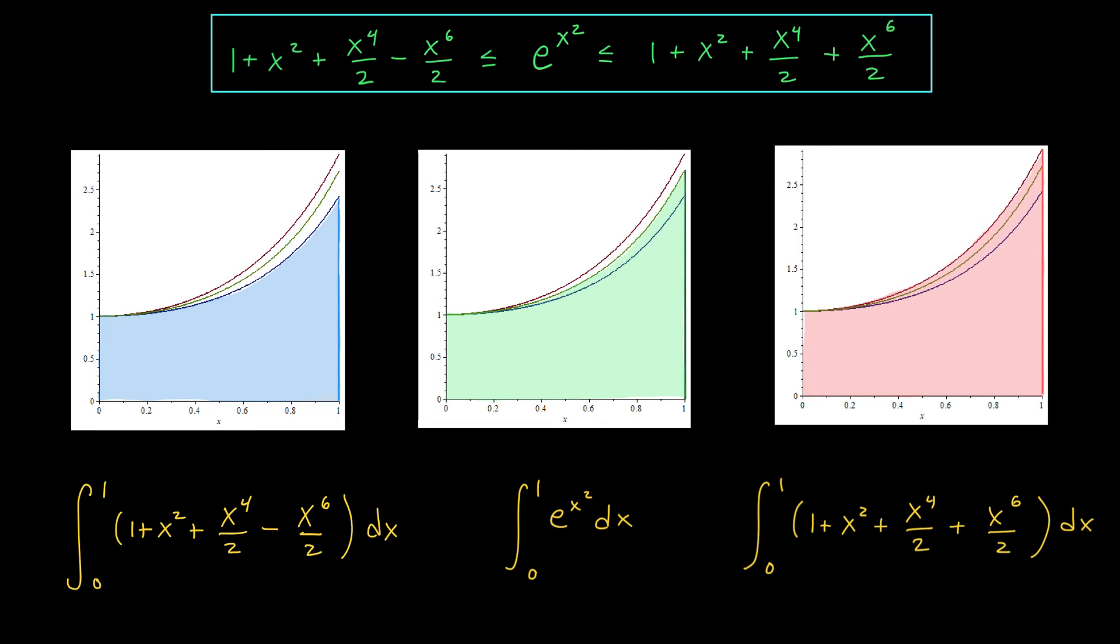Now we're interested in understanding the value of this integral, right? Which we interpret as the area beneath this curve from x equals 0 to x equals 1. How does this area compare with the area, say, under the blue curve or under the red curve? Well, you can see if the blue curve is underneath the green curve, then it encloses a little bit less area than the green curve does, right? The integral from 0 to 1 of the lower bound is going to be less than or equal to the integral from 0 to 1 of the function we're actually interested in. Similarly, the red curve is going to enclose a little bit more area than the green curve.